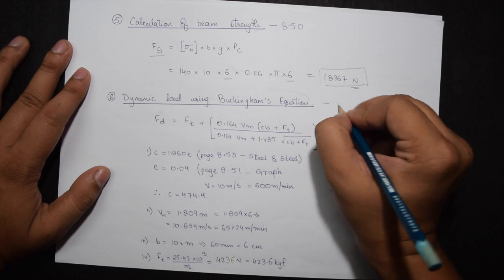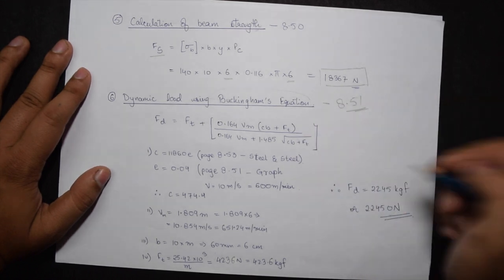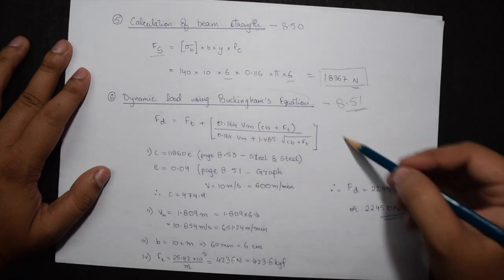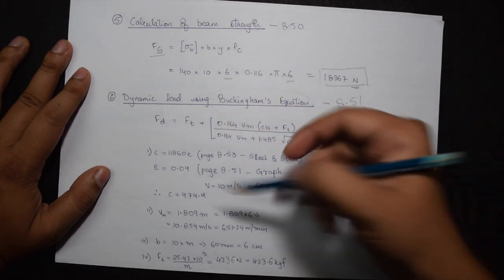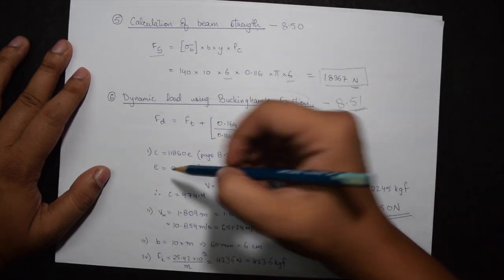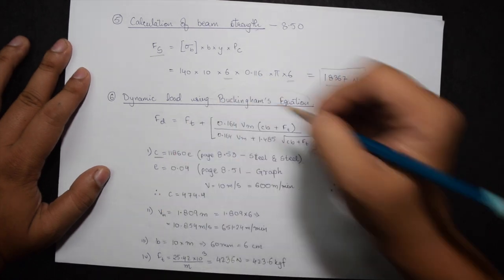We need to put in four different values. The value of C will come from page 8.53 under the table of calculation of values of C under 20 degree full depth steel and steel. I have the value 11,860 times E.